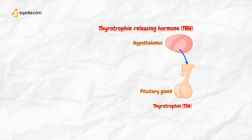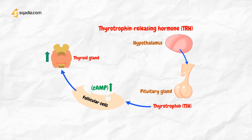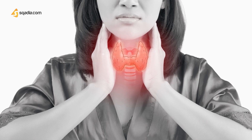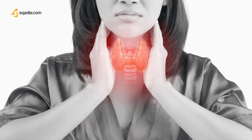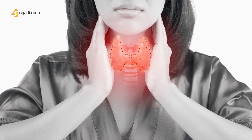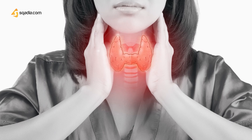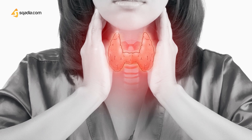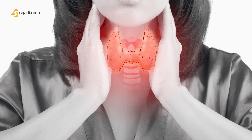TSH activates receptors on the follicular cells and increases cyclic adenosine monophosphate (cAMP), which stimulates the synthesis and release of hormones from the thyroid gland. In hypothyroidism, or rarely iodine deficiency, abnormally high levels of TSH result in the enlargement of the thyroid gland, known as goiter.